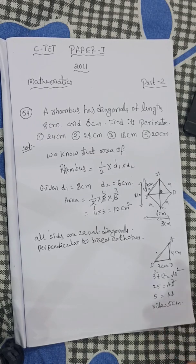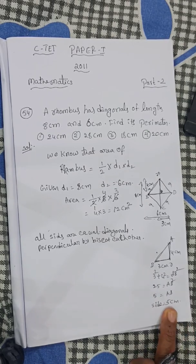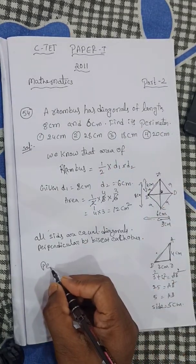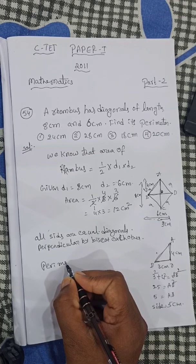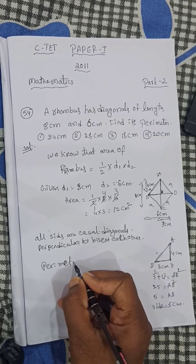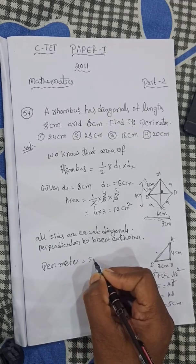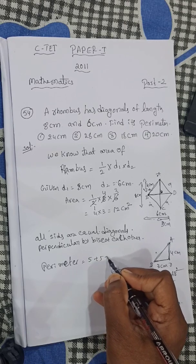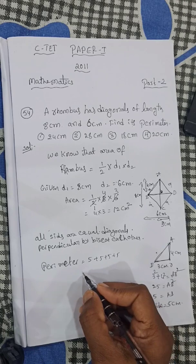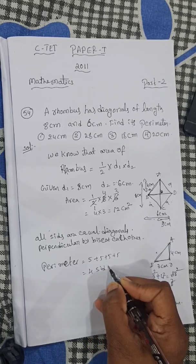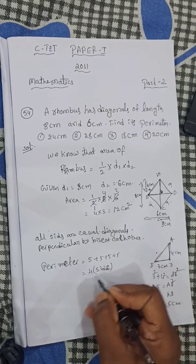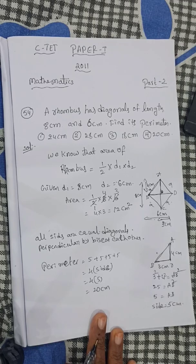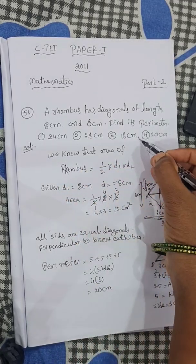One side value is 5 cm. Now, what is being asked here is the perimeter. The perimeter is equal to all sides: 5 plus 5 plus 5 plus 5, that is equal to 4 into side, which is 4 into 5, equal to 20 cm. This is the answer — option four.